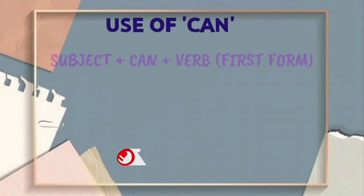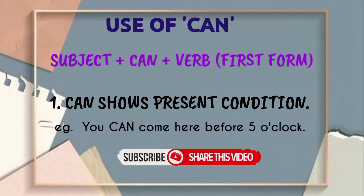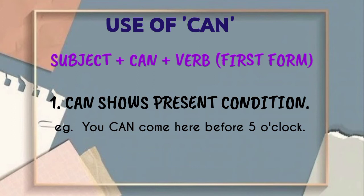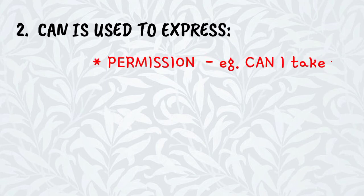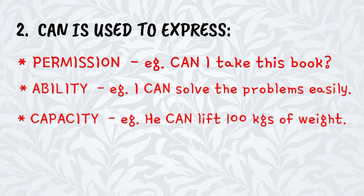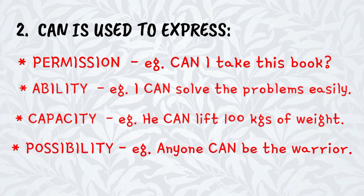Use of Can: In a sentence, first write the subject, then can, then the first form of verb. Can shows present condition — you can come here before five o'clock. Can is used to express permission — can I take this book? Ability — I can solve the problems easily. Capacity — he can lift hundred kgs of weight. Possibility — anyone can be the warrior.